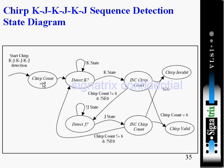Initially the chirp count is zero. First it will detect K; when not-K comes it will stay. When K comes it will increment the count to one. After that it will go and wait for J, checking whether count is six or not — single ended zero is not wanted. When J comes it increments again and goes back to K state. When count reaches six it will go to chirp valid state — meaning you have a valid chirp.